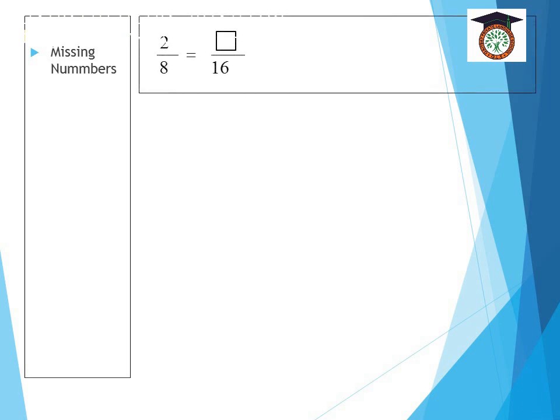Now we have some exercises for missing numbers. In this case, you have to find the number that is missing. I have to look to the numbers from left to right. If the numbers from left to right are increasing, you have to multiply to find the missing number. So ask yourself, 8 times what is equal to 16?